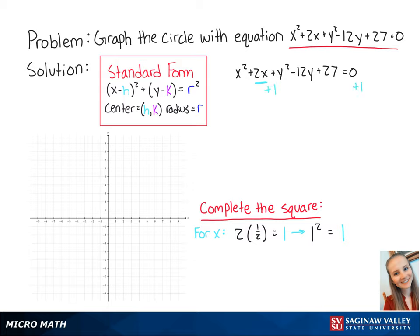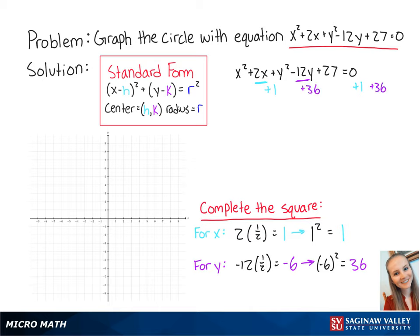To complete the square for y, we take the coefficient of y, which is negative 12, we multiply it by 1 half, which is equal to negative 6, then we take negative 6 and we square it, which is equal to 36. So now we know that we need to add 36 to both sides of the equation.